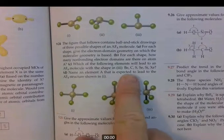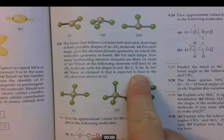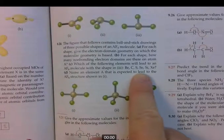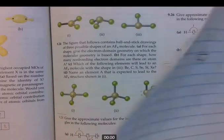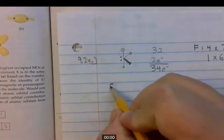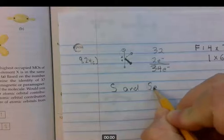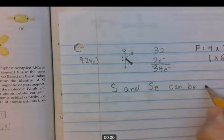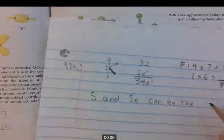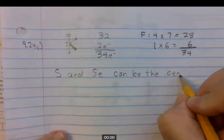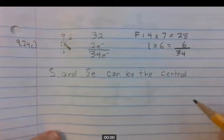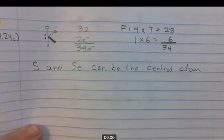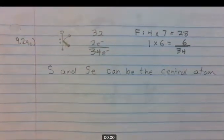We're looking for something that has 6 valence electrons. If we look at the choices, sulfur and selenium, S and Se, have 6 valence electrons. So that would be the answer.